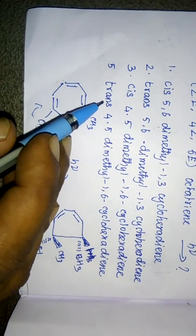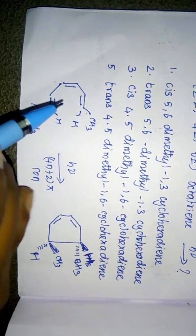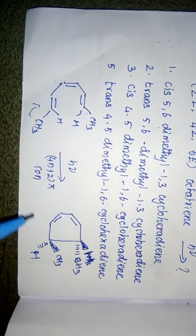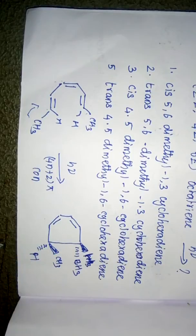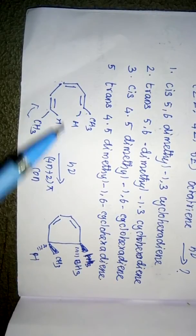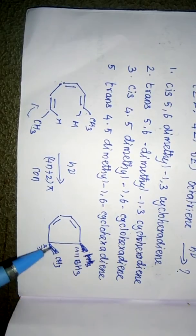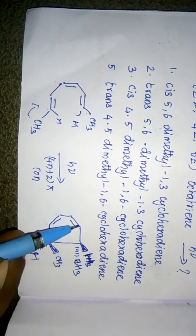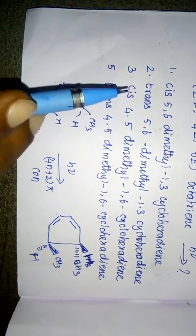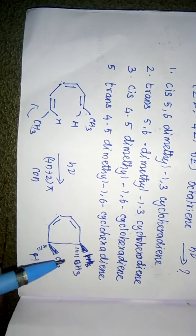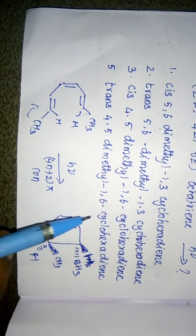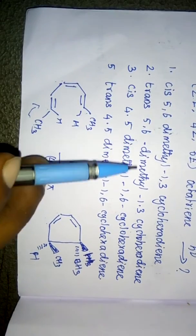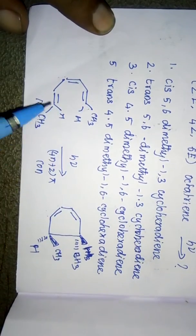In conrotation, the methyl group goes up on one carbon and hydrogen goes up on the other, forming a sigma bond. The 3π system reduces to a 2π system with one extra sigma bond. The methyl groups end up in trans positions. Numbering gives C5 and C6 as the methyl-bearing carbons, so the product is trans-5,6-dimethyl-1,3-cyclohexadiene.